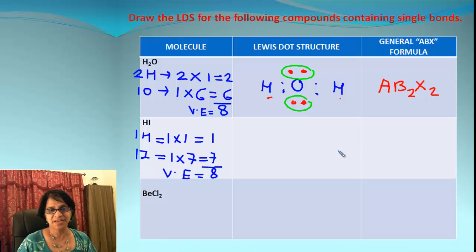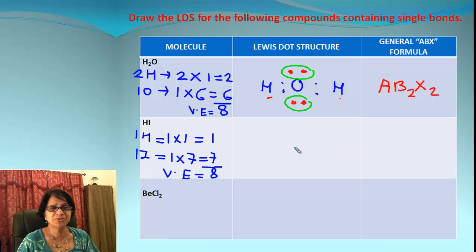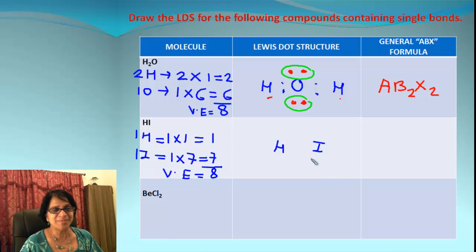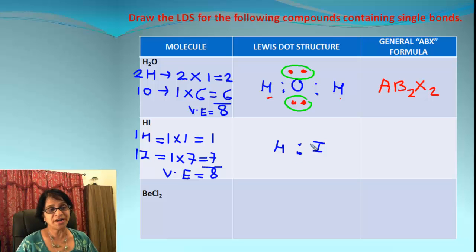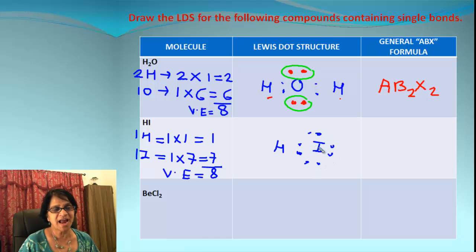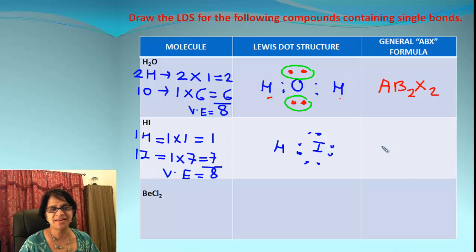Now we have to find out the central atom. H and I both have exactly equal numbers of atoms — in fact, we only have 2 atoms, so it doesn't really matter which is in the center. We just put H and I side by side and show the electrons between them. Out of 8 electrons, we used 2 for the bond. We have 6 electrons still remaining. Hydrogen already has 2 and that's all it can have, so the remaining 6 electrons go around iodine. Total is 8 and we are done. The ABX formula will be AB — there is no X at all.